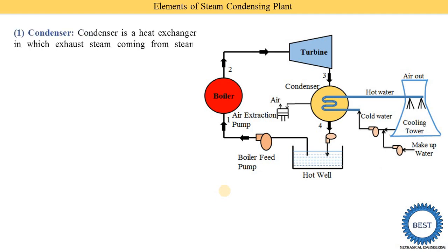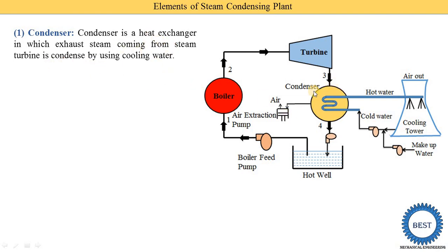The first component is the condenser. The condenser is a heat exchanger in which exhaust steam coming from a steam turbine is condensed by using the cooling water. The input to the condenser is the steam coming out from the steam turbine, and this steam is cooled by using the cold or cooling water.